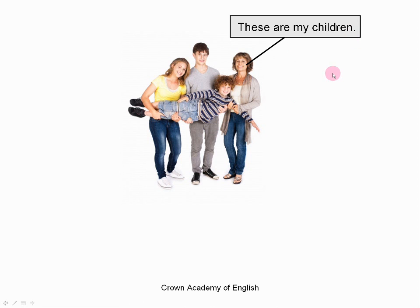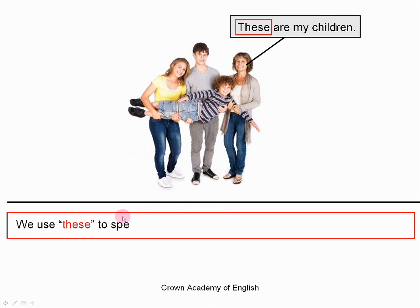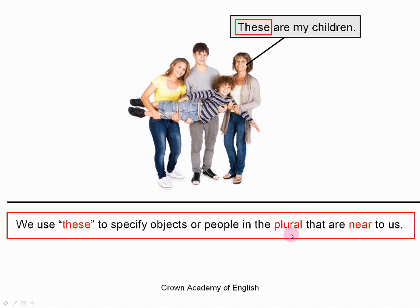These are my children. So here we use the word 'these'. The expression is 'these are'. We use the word 'these' to define objects or people in the plural which are close to us, which are near to us. So this is what changes from 'this' — this time it is the plural. The rule: we use 'these' to specify objects or people in the plural that are near to us. So 'this' for the singular and 'these' for the plural.